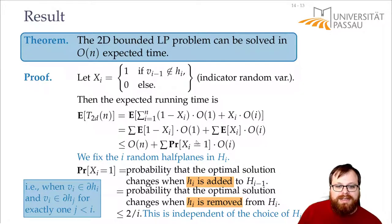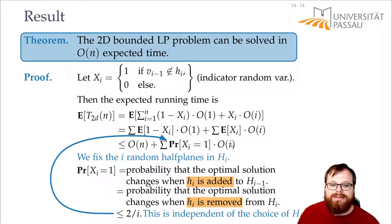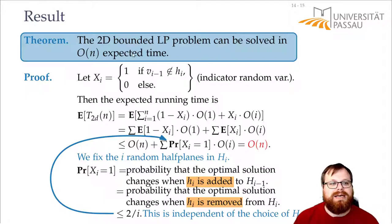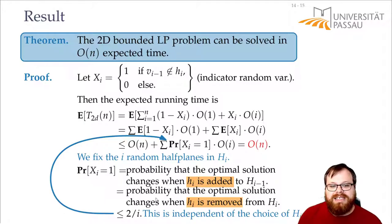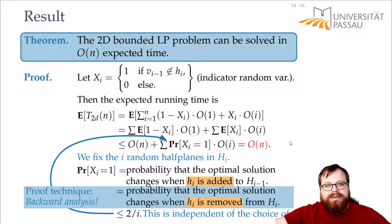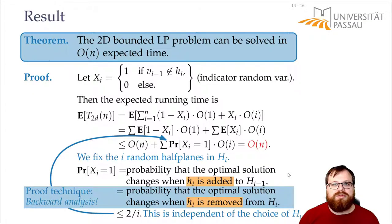Now we can plug this back in. The probability that we are in the changing case is only 2/i. So we have O(n) plus the sum of (2/i) times O(i), and that is again O(n). We have now proven that this randomized incremental approach runs in O(n) expected time.